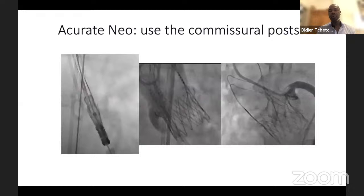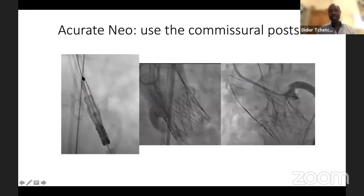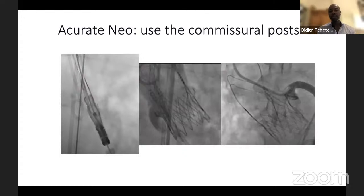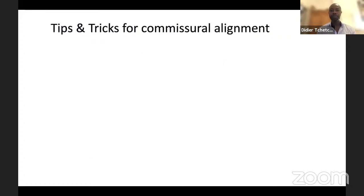Importantly, when targeting three o'clock, one post should appear extremely flat — like a thin line — and this should be the post facing the commissure between the coronary sinuses. For the Accurate Neo, keeping the flush port at 12 o'clock achieves adequate commissure alignment in the vast majority of patients. Before starting deployment, confirm in the cusp overlap view — most often an RAO-cranial projection — that one post appears as a thin flat line, with three dots facing the commissure between the right and left coronary cusp.